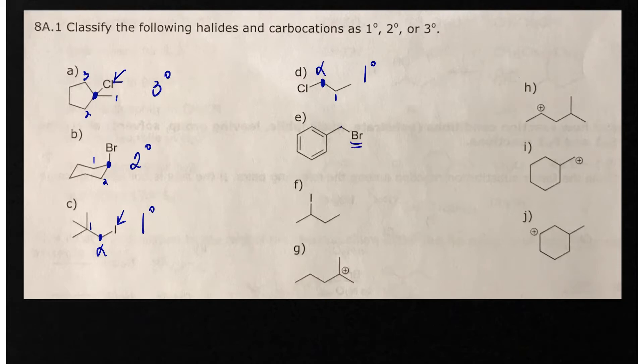Here's our halide. This is the alpha carbon, connected to one additional carbon atom. We classify this as primary.